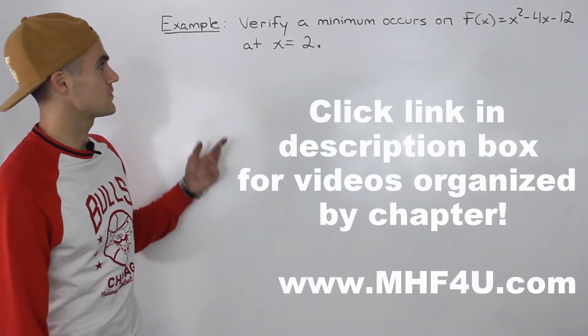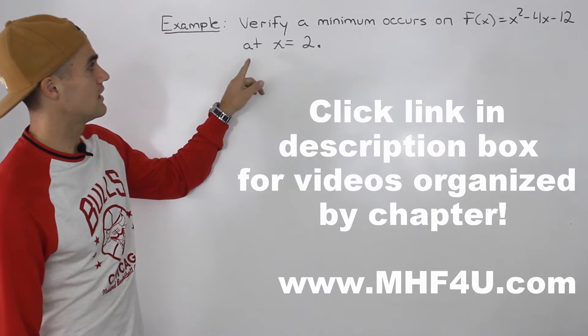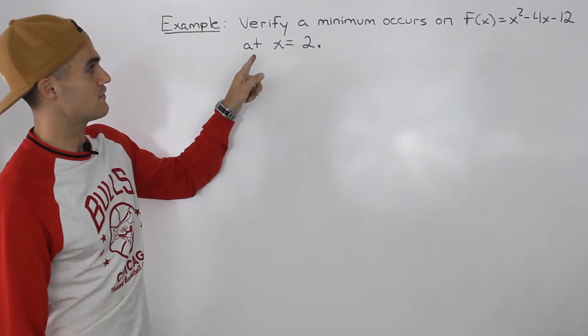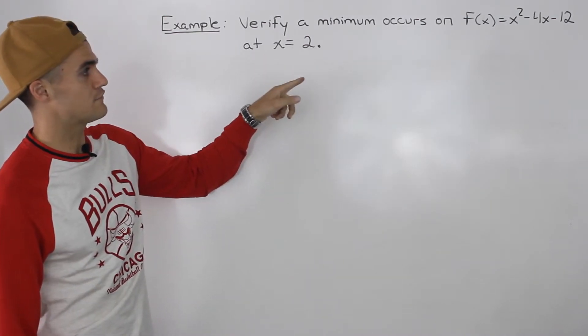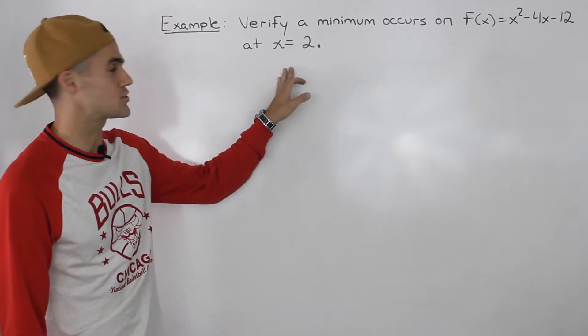Let's apply what we just learned to a specific example. We're asked to verify a minimum occurs on f(x) = x² - 4x - 12 at an x value of 2.